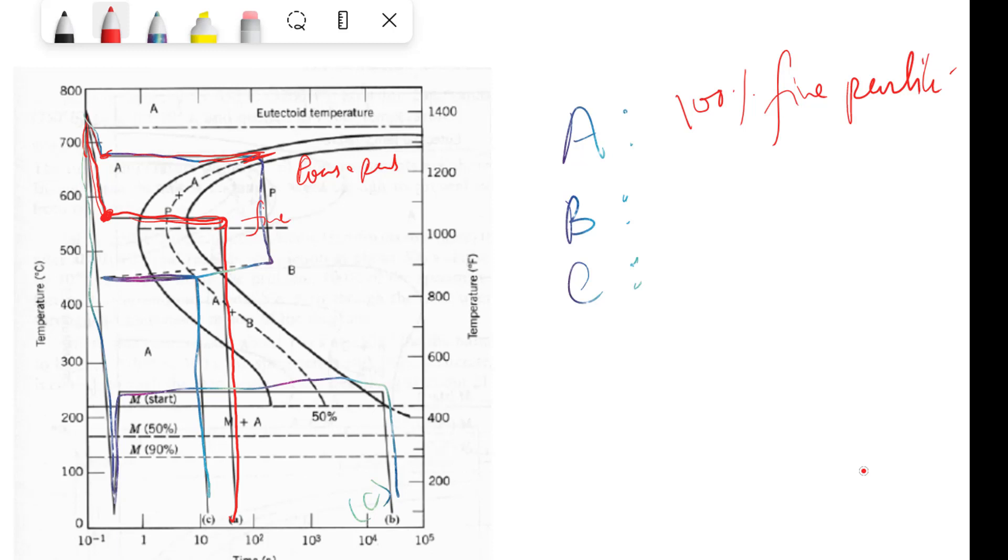Then we are cooling it suddenly and we are cooling it up to temperature B. During this cooling there will be no transformation, but at this temperature again we are giving some time. What time we are giving? We can calculate from here.